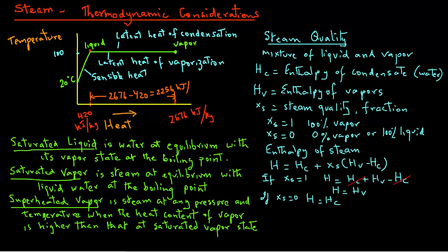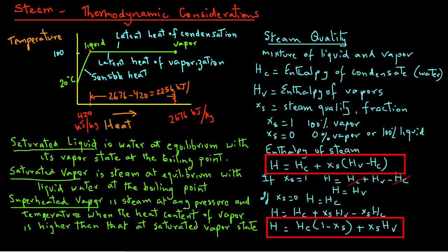We can also write this in a slightly different form. H equals HC plus XSHV minus XSHC. Then we can take the quantity HC out of the parentheses in the right hand side and rearrange the terms to write H equals (1 minus XS) times HC plus XSHV. These are essentially two different ways of expressing the enthalpy of the steam vapor mixture.